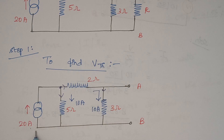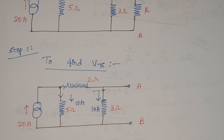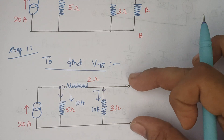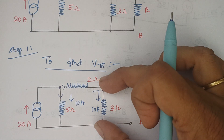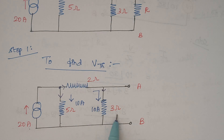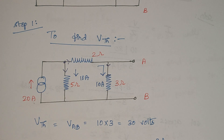So this 20 amps gets divided into 10 amps and 10 amps. One 10 amps flows through this 5 ohms and other 10 amps flows through the series combination of 2 ohm and 3 ohm. So now we need to find the voltage across this terminal. The voltage across this terminal is nothing but the voltage impressed across this 3 ohm resistor. Therefore the voltage is given by I into R. We know the current that flows through this 3 ohm and we know the value of resistance. So 10 into 3 gives the answer as 30 volts. This is our step 1.